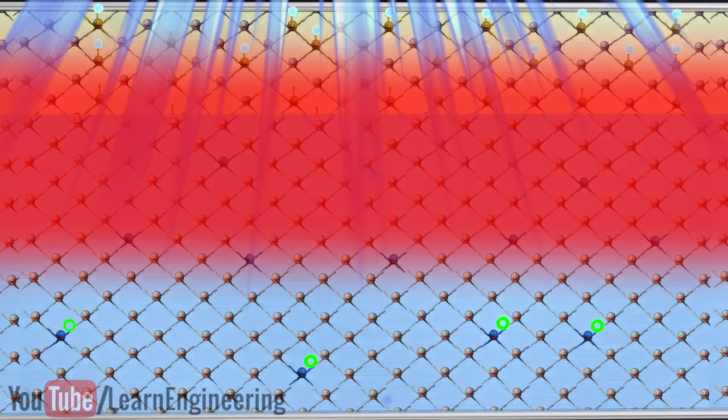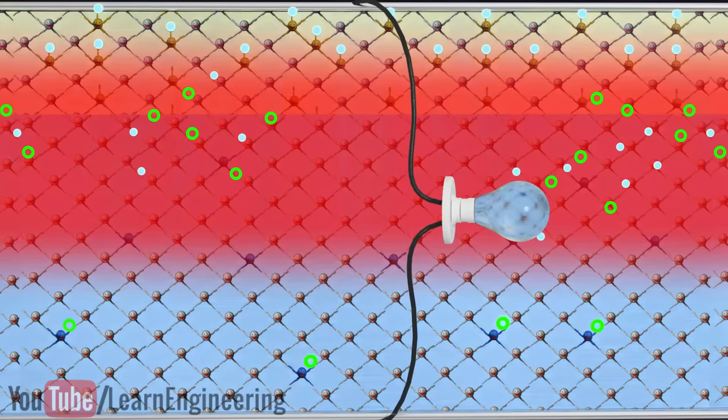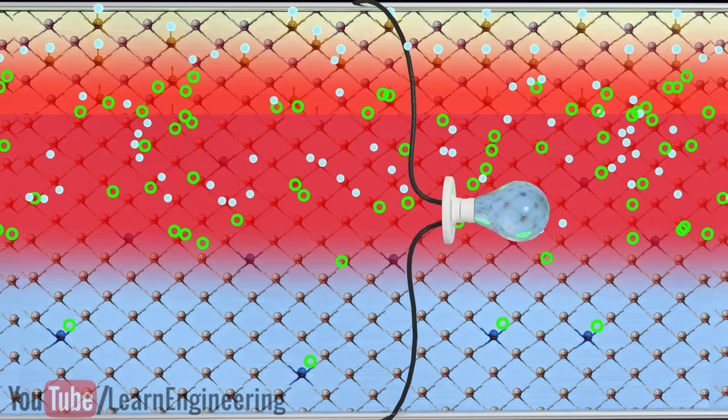You should note that the thickness of the depletion region is much higher here compared to the previous case. This means that, due to the light striking, the electron-hole pairs are generated in a wider area compared to the previous case. This results in more current generation by the PV cell.